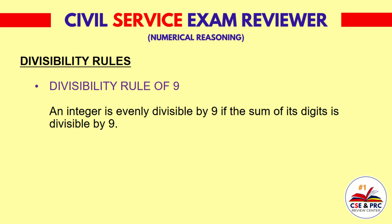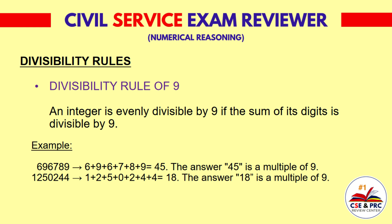Divisibility Rule of 9: An integer is evenly divisible by 9 if the sum of its digits is divisible by 9. For example, 696,789: 6+9+6+7+8+9 equals 45, which is a multiple of 9. For 1,250,244: 1+2+5+0+2+4+4 equals 18, which is a multiple of 9.